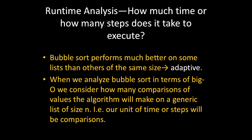How many steps does Bubble Sort take to execute? Bubble Sort performs better in some situations than others — some lists are much better suited than others of the same size. This means that Bubble Sort is adaptive; it adapts itself to certain conditions to perform better than others. When we analyze Bubble Sort in terms of Big O, we consider how many comparisons of values it will make on a generic list of size n. Our unit of time or steps will be comparisons, so we look at how many comparisons the algorithm makes against the size of the input list.